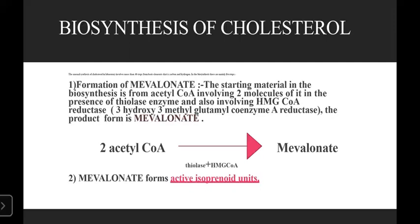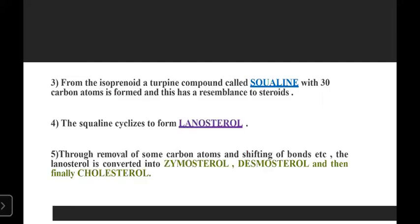In the second step, mevalonate is converted to isoprenoid units. When isoprenoid units are formed, in the next step, squalene is produced. Squalene is a triterpene compound with 30 carbon atoms, which resembles steroids — though cholesterol has only 27 carbon atoms. Squalene is then cyclised to form lanosterol. Through removal of some carbon atoms and shifting of bonds, lanosterol is converted into zymosterol, then desmosterol, and finally cholesterol.